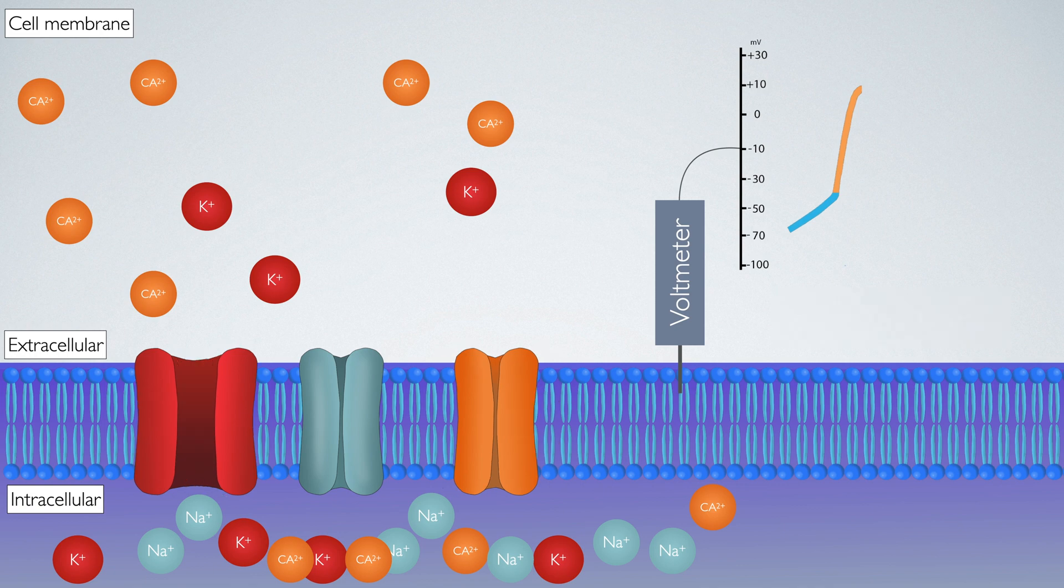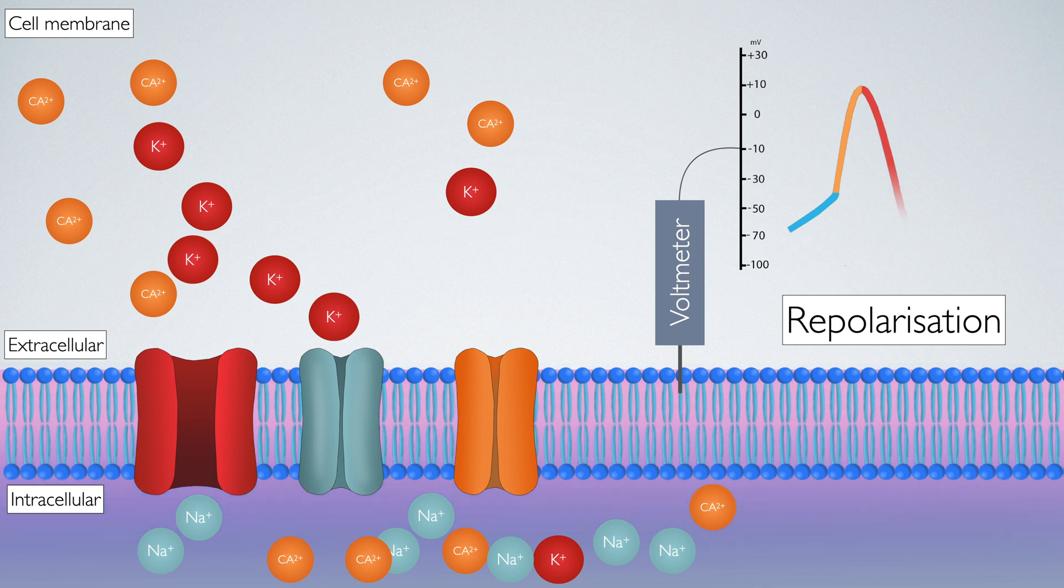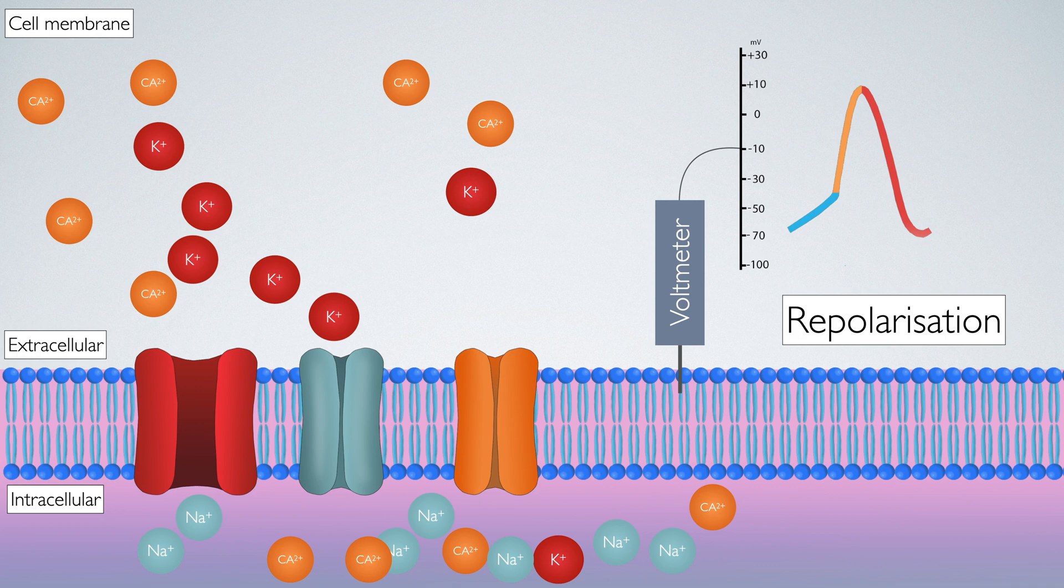At this point, the potassium channels open and potassium leaves the cell. This brings the membrane's charge back to a negative resting position. This process is known as repolarization.